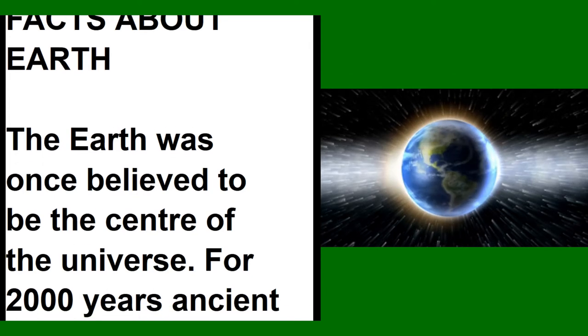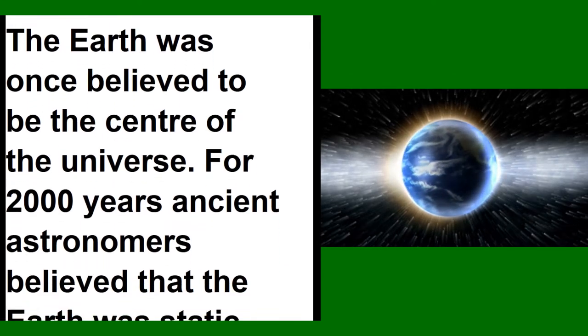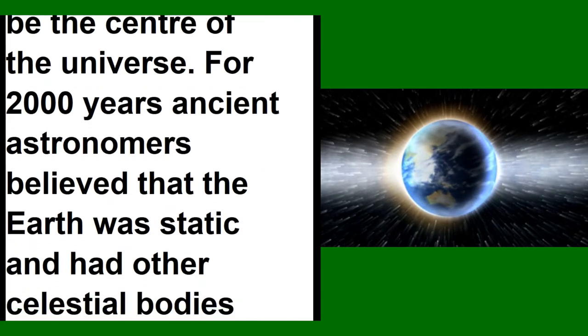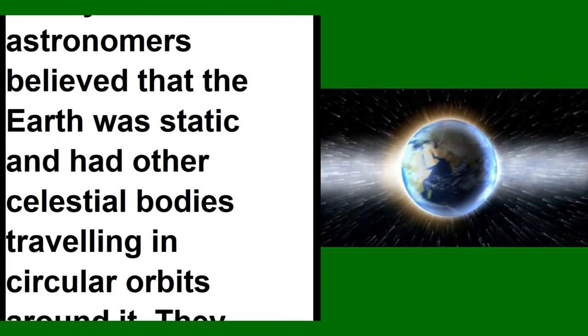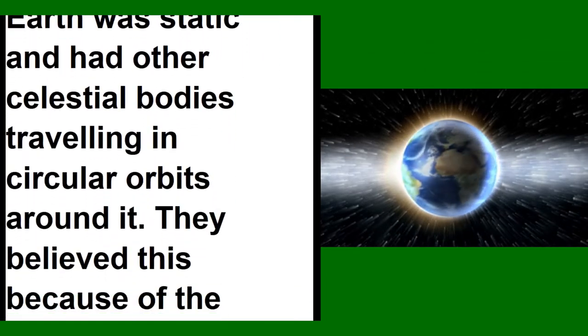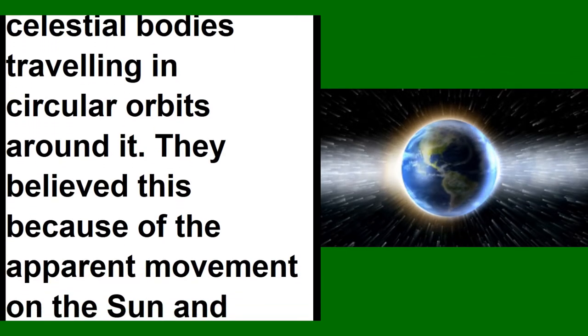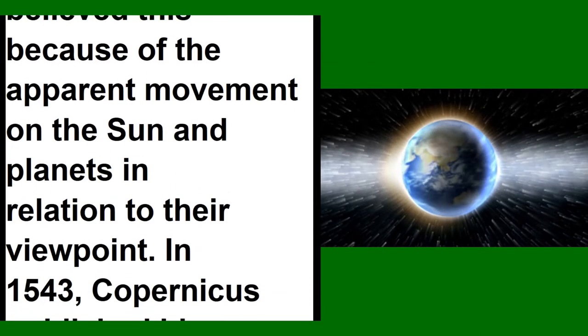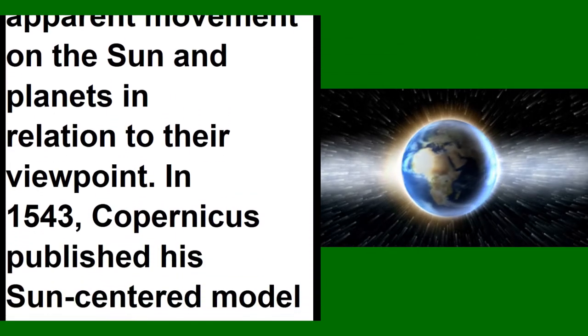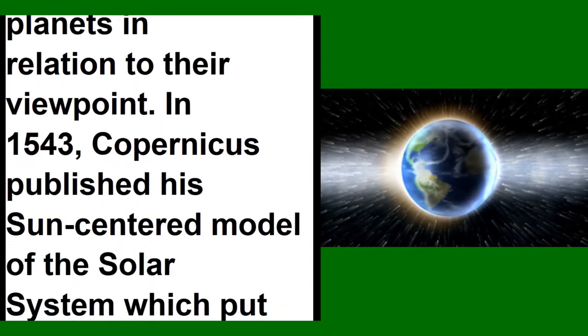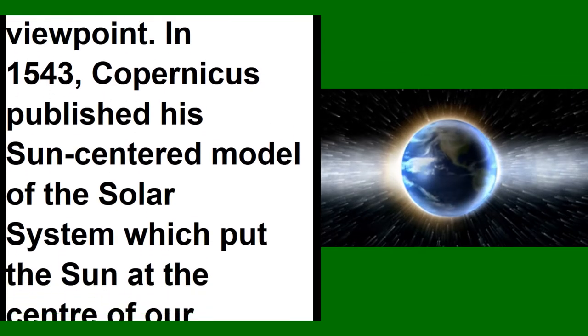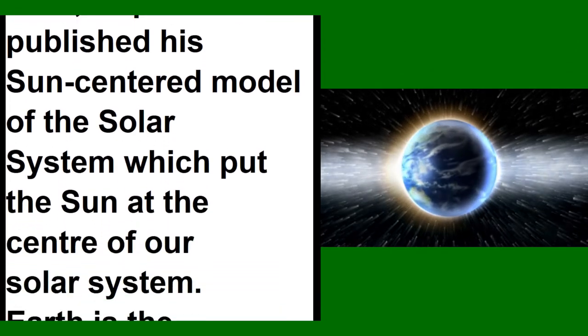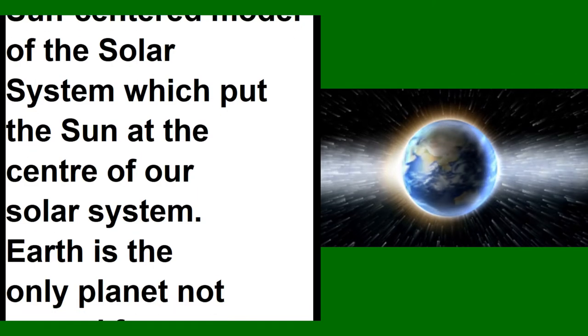Facts About Earth. The Earth was once believed to be the center of the universe. For 2,000 years, ancient astronomers believed that Earth was static and had other celestial bodies traveling in circular orbits around it. They believed this because of the apparent movement of the sun and planets in relation to their viewpoint. In 1543, Copernicus published his sun-centered model of the solar system, which put the sun at the center.